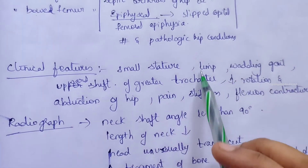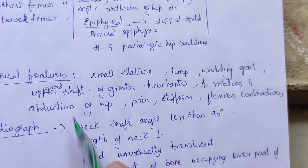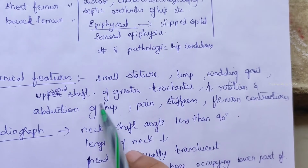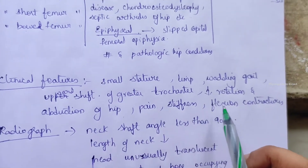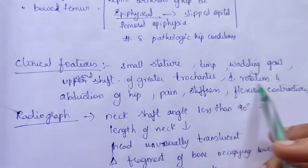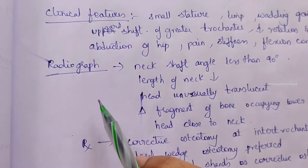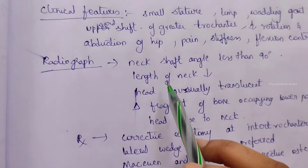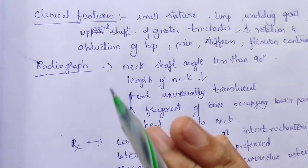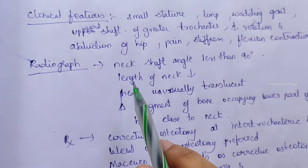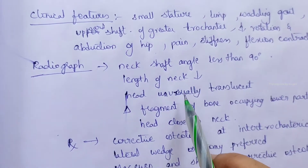There is an upward shift of the greater trochanter, decreased rotation and abduction of the hip, pain, stiffness, and flexion contractures. On X-ray, the neck-shaft angle is less than 90 degrees and the length of the neck is decreased.